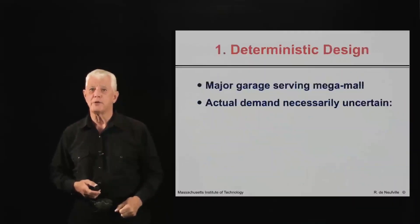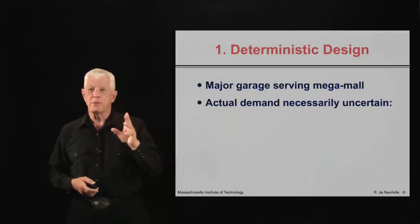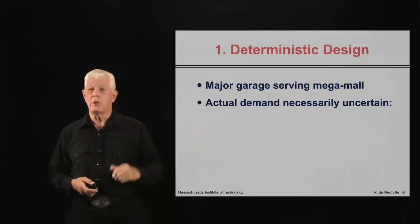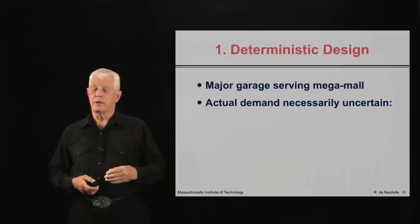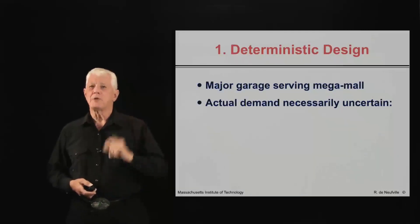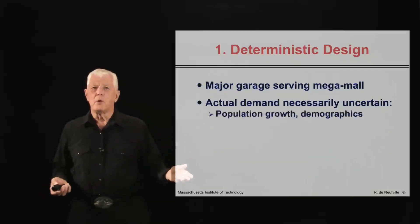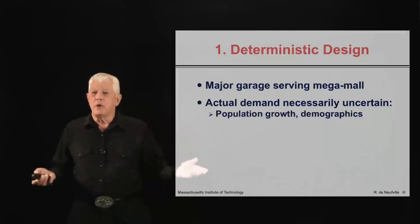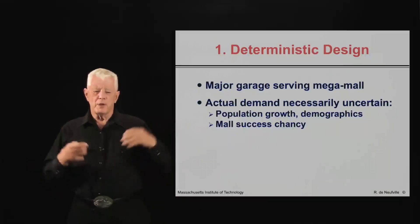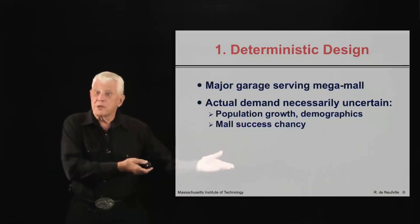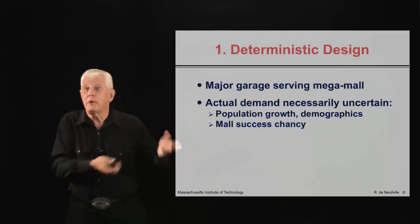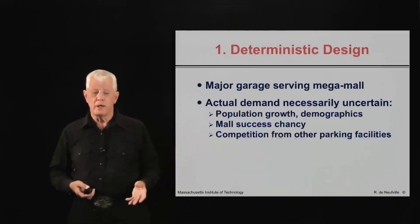So we're going to have three steps of the total analysis, and we'll start with the engineering base case. The deterministic design is for a major garage serving a mega mall — in this case, the Bluewater case in England. The actual demand over time is, of course, very uncertain. Why? Because we don't know the population growth, we don't know the demographics of the area over the next 20 years, we don't know whether the mall will succeed. Maybe they have the wrong stores. Maybe people don't like it. Maybe it'll be wonderful. We just cannot know for sure.